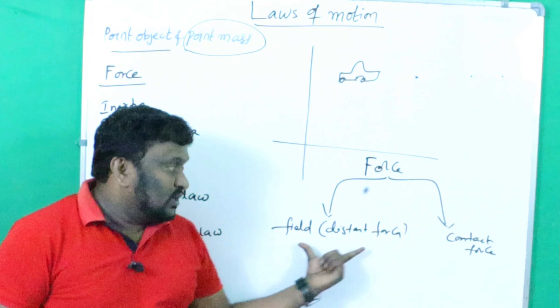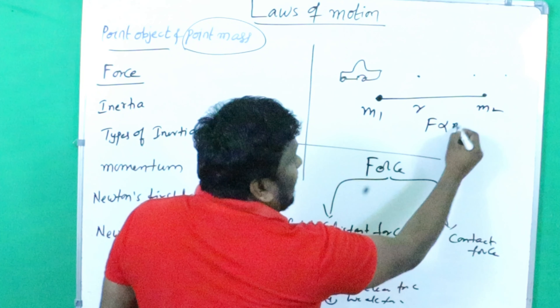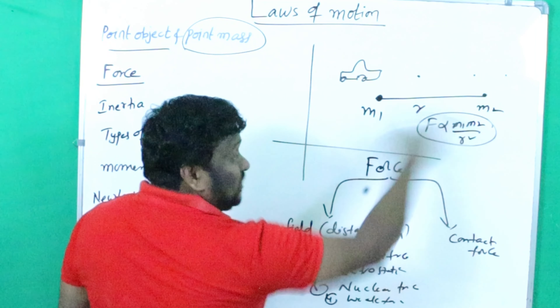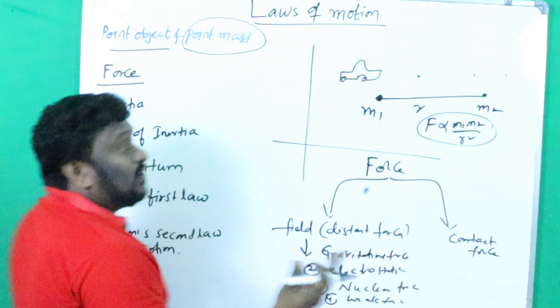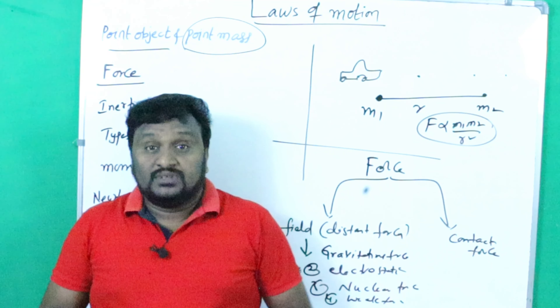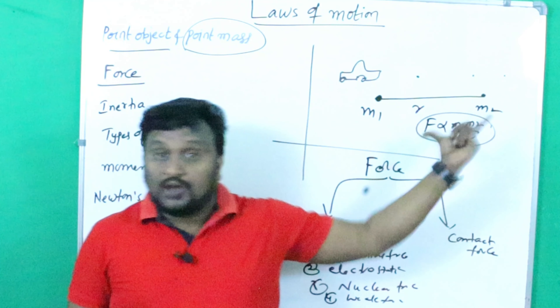For distance forces, examples are: gravitational force, electrostatic force, nuclear forces, and weak forces — all these are examples of field or distance forces. Take, for example, a first body having some mass m1 and a second having mass m2. There is some gravitational force acting between them according to the universal law of gravitation: F is proportional to m1·m2 / r². These two bodies are not in physical contact, yet some force is acting between them — that type of force is called a field force or distant force.